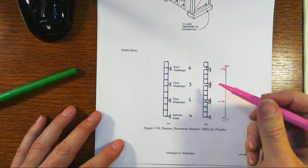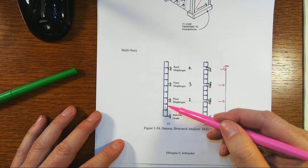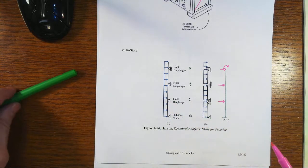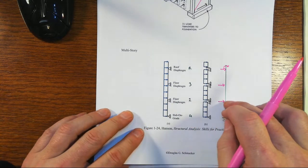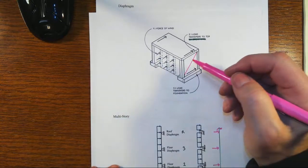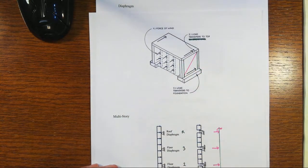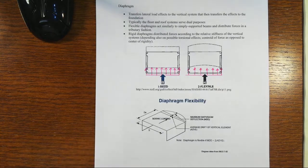But the key here in the modeling is that we're going to treat each story, the external part, as a simply supported beam to transfer the loads into the diaphragm level, and then the diaphragm will take things over to wherever the vertical elements are.